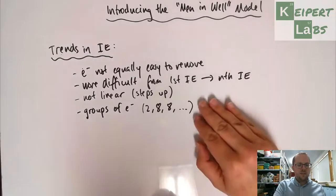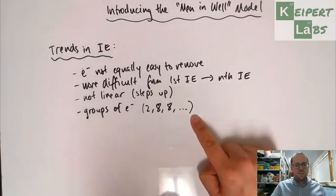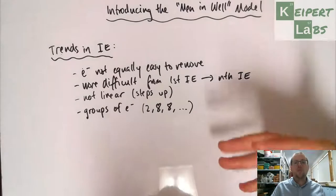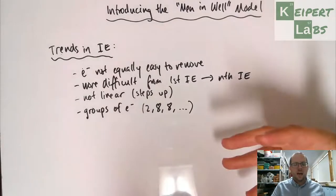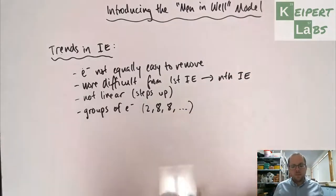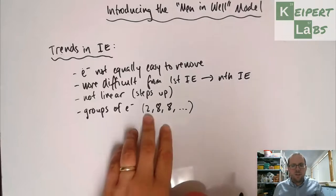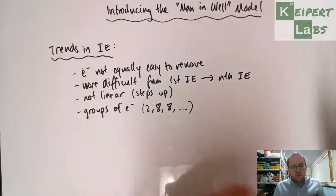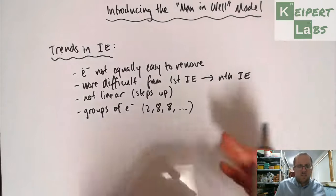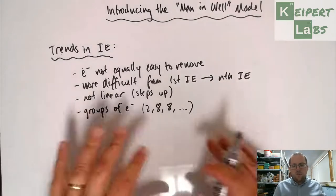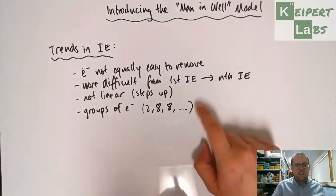That also leads us to positing or proposing that there are actually groups of electrons based on this information. The last two being a group and then eight and then eight and so on. What we're going to do is use a model to try and explain how these groups might work.